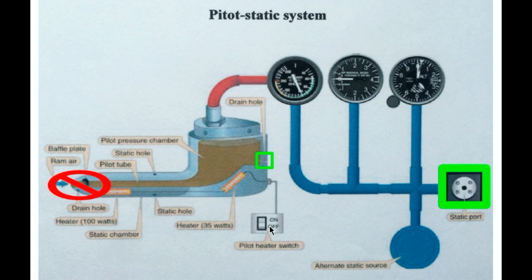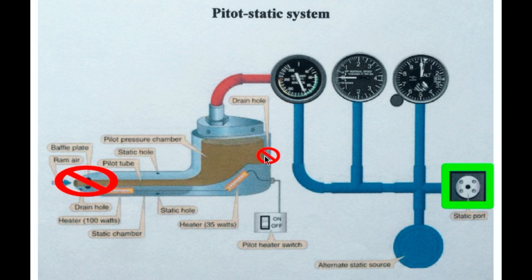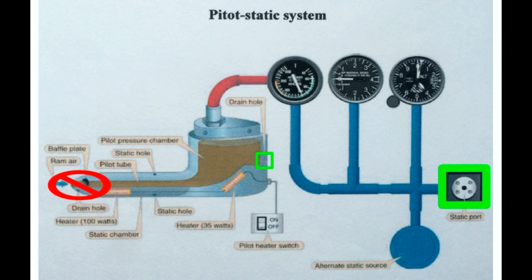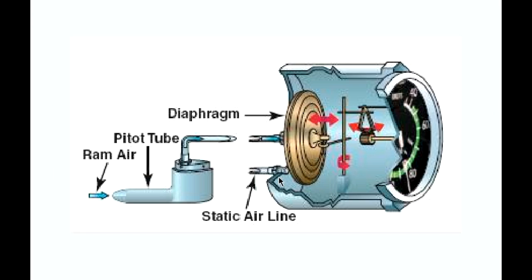The other scenario is when both the pitot tube front inlet and the drain hole are blocked. In the previous scenario, the drain hole was receiving the same pressure as the static port. But now, with the drain hole also blocked, there is absolutely no more pressure change within the diaphragm. Air is trapped inside — it's not moving, not leaving, not entering.